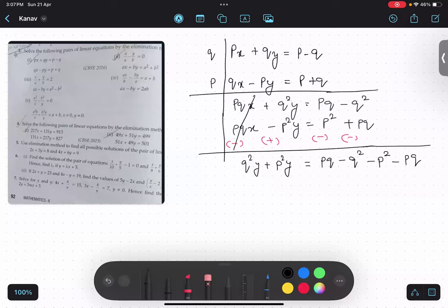Now see over here, this pq and pq will get cancelled. And over here we will get y common. y common q square plus p square equals to, and over here I will get minus common, negative common q square plus p square.